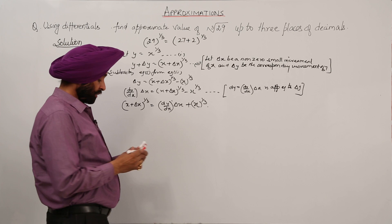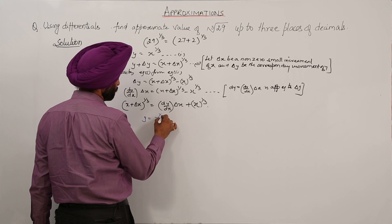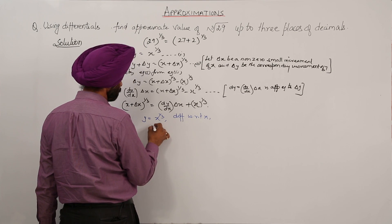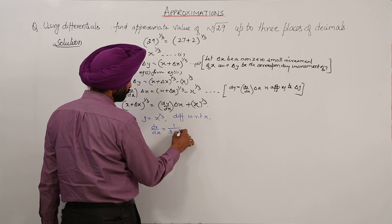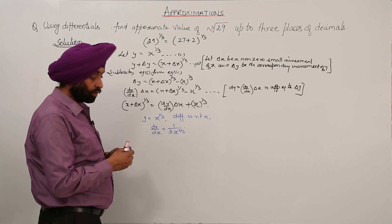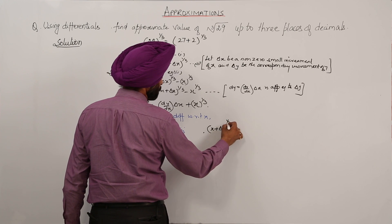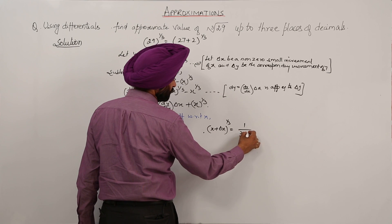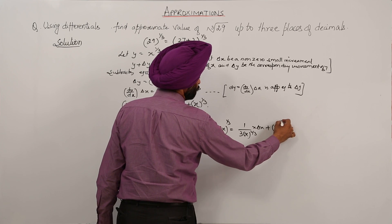Now, what is dy/dx? Since y is equal to x raised to power 1/3, differentiating with respect to x gives dy/dx equal to 1 upon 3 x raised to power 2/3. Putting this value in the expression, (x plus delta x) raised to power 1/3 is equal to 1 upon 3 x raised to power 2/3, times delta x, plus x raised to power 1/3.